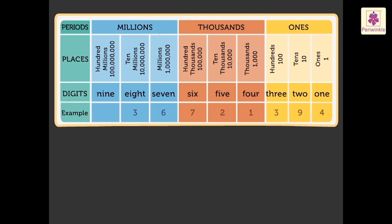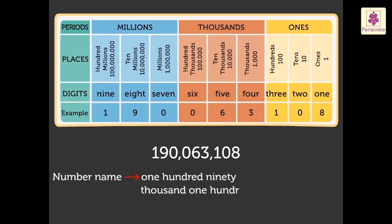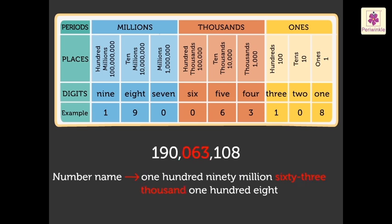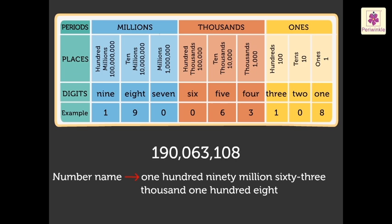Let us try one more example. We write this number as 19,003,108. Did you notice? Here, we did not read the place value of the zeros, but we did write them to show the place value.